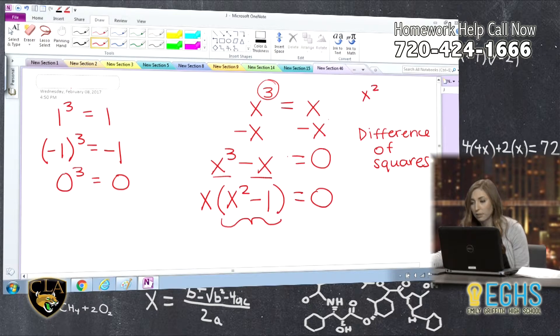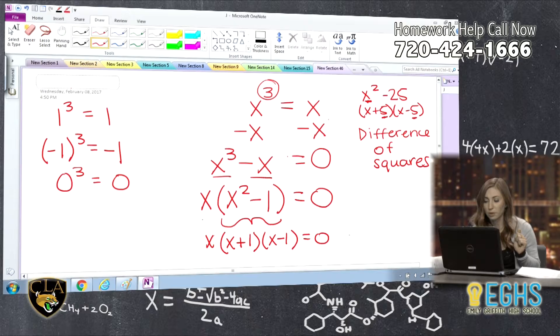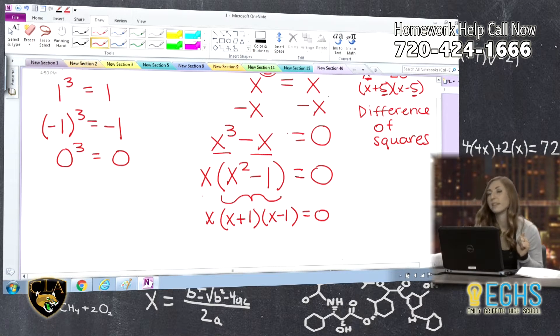And then this right here, if we were to factor that, that's called difference of squares. And the way that those factor is, like I'll give you an example here. If I had X² minus 25, that would factor to X plus 5, X minus 5. You take the square root of the first term and then the square root of the second term and do a plus and a minus in between. So if I were to do that here, it'd be factoring to X plus 1, X minus 1, equals zero.